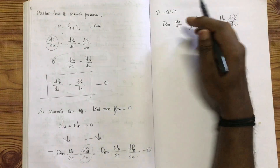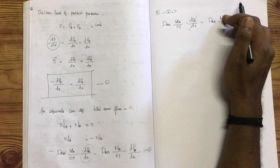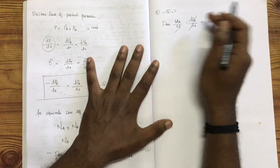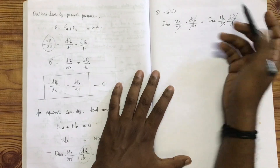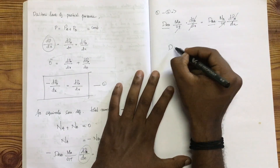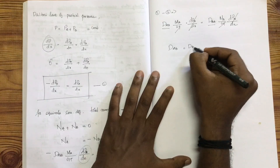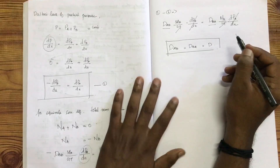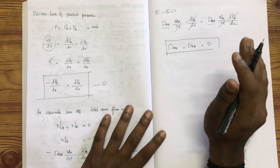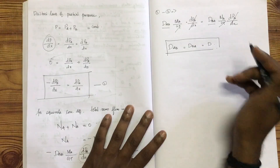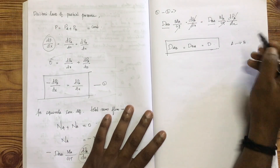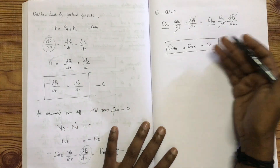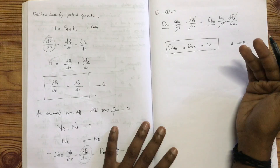Since mA by GT equals mB by GT, it follows that for equimolar counter diffusion, the diffusion coefficient DAB for diffusion of component A into B equals DBA for diffusion of component B into A. They must be equal.